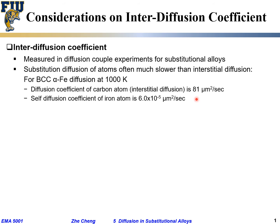In comparison, within the same material, still alpha iron, the so-called self-diffusion coefficient — meaning just the iron itself, or the tracer, if I put a radioactive iron into it — is 6×10⁻⁵ microns squared per second. We are talking about 7 orders of magnitude difference. It's really very different. The carbon goes way faster than the substitutional diffusion of the same element.